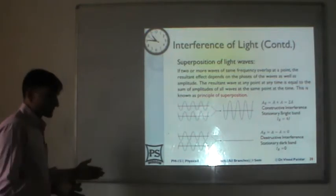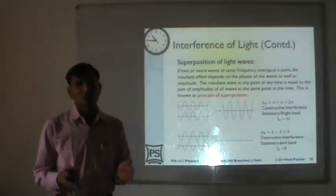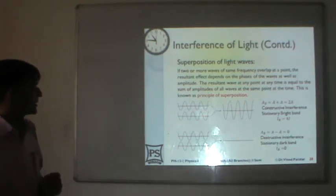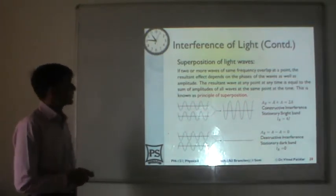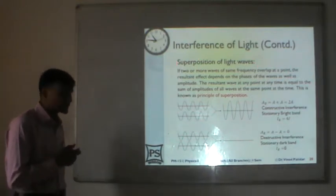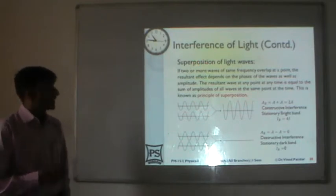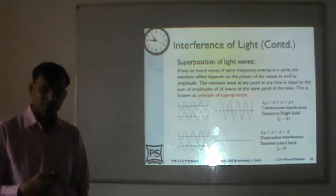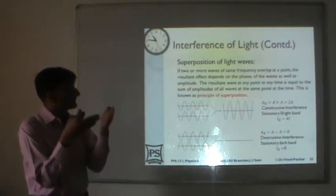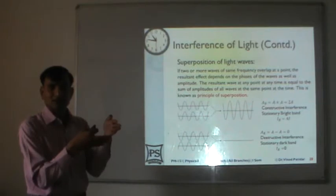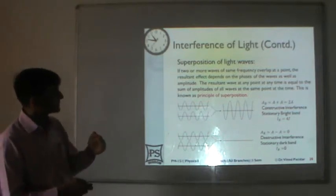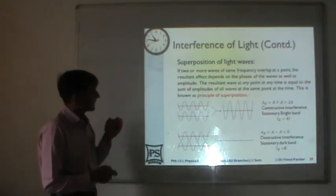Now we have understood the basic terminology we will use for interference of light. We now come to the basic principle of interference and how it works. One of the very fundamental principles of wave mechanics is known as the superposition of waves. Whenever more than one wave is passing through a common point, there will be an overlapping between all the waves.